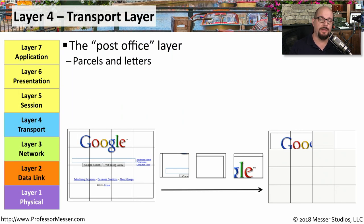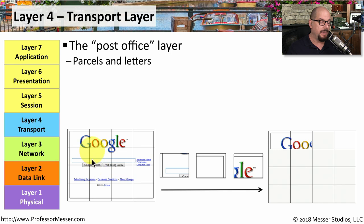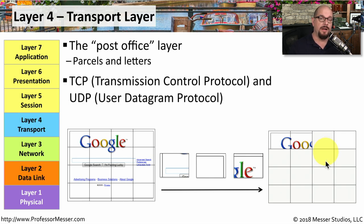The information that appears in our browser window doesn't appear all at once with one packet. It usually takes many packets put together to build one screen in our browser. A good example of how this occurs is at OSI layer four, or the transport layer. If we need to get a Google screen across the network, it's split into smaller pieces, sent across the network, and then built in our browser as the information arrives. The most common protocols that accomplish this are TCP, or Transmission Control Protocol, or UDP, the User Datagram Protocol. If you ever hear anyone referring to a layer four protocol, they're almost always referring to TCP or UDP.